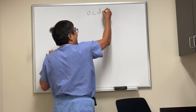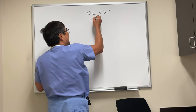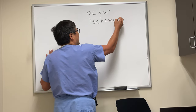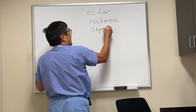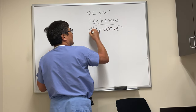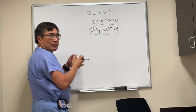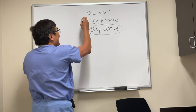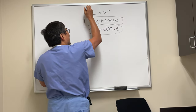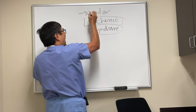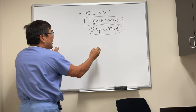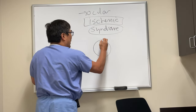I'm going to talk to you about ocular ischemic syndrome in neurophthalmology. It's a syndrome because it's a final common pathway for ischemia involving not just the retina or the optic nerve, but the whole eye — and so that's what we mean by ocular ischemia.